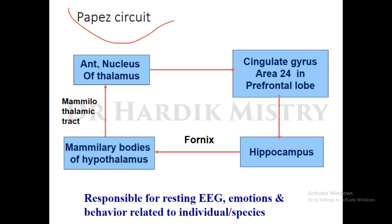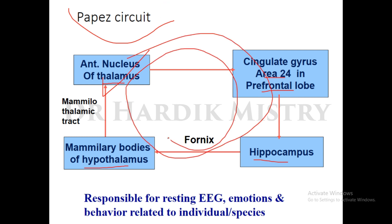The Papez circuit begins at the anterior nucleus of the thalamus, where fibers go to the cingulate gyrus (area 24) in the prefrontal lobe. Fibers then travel to the hippocampus, and via the fornix to the mammillary bodies of the hypothalamus. Through the mammillothalamic tract, fibers return to the anterior nucleus of the thalamus. This circuit is responsible for resting EEG, emotions, and behavior related to the individual and species.